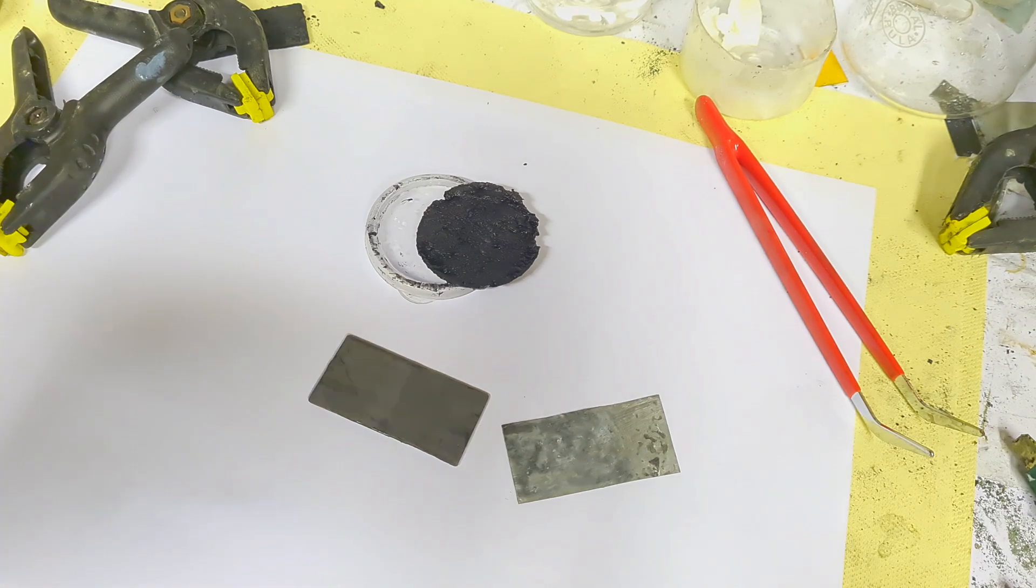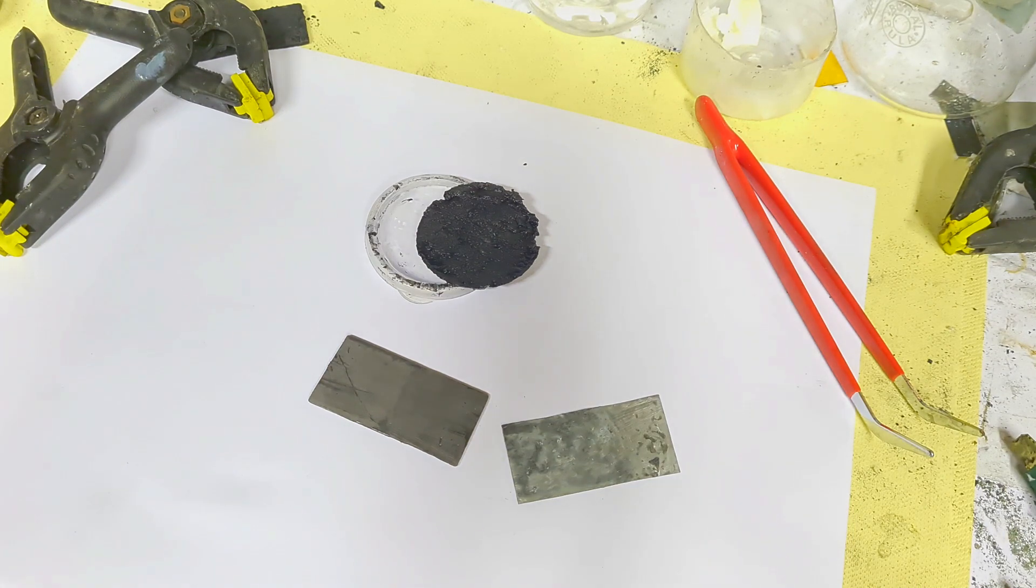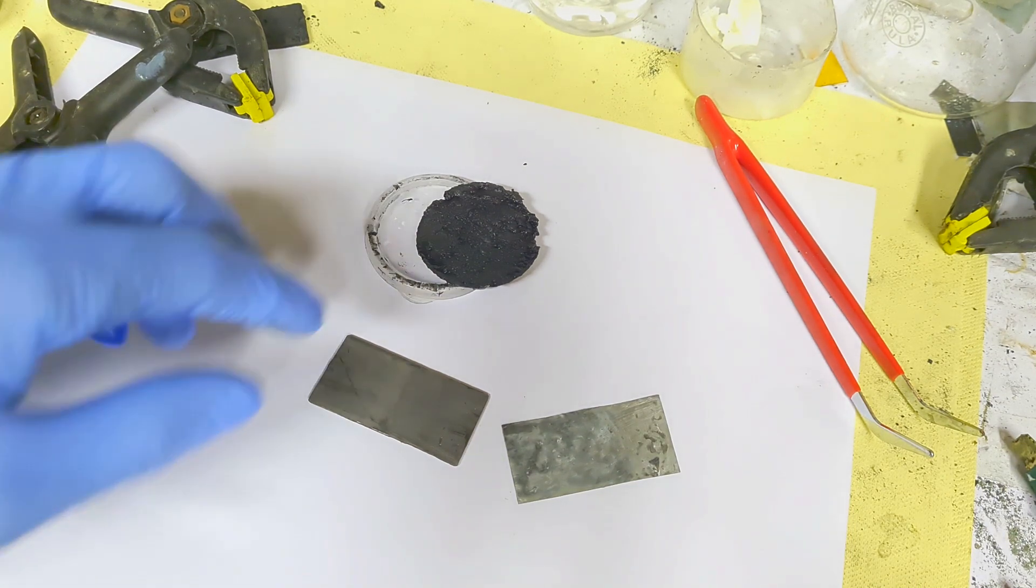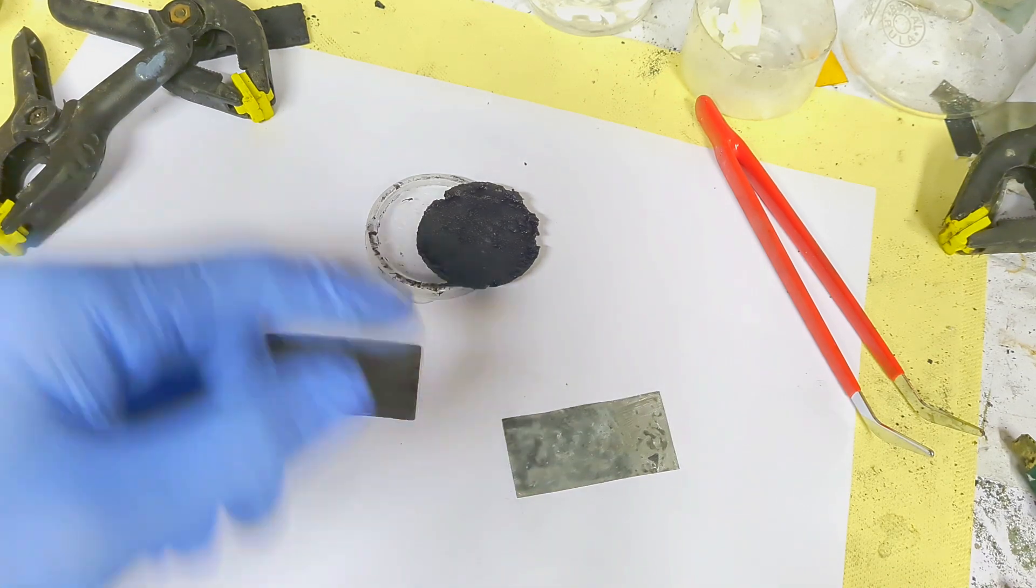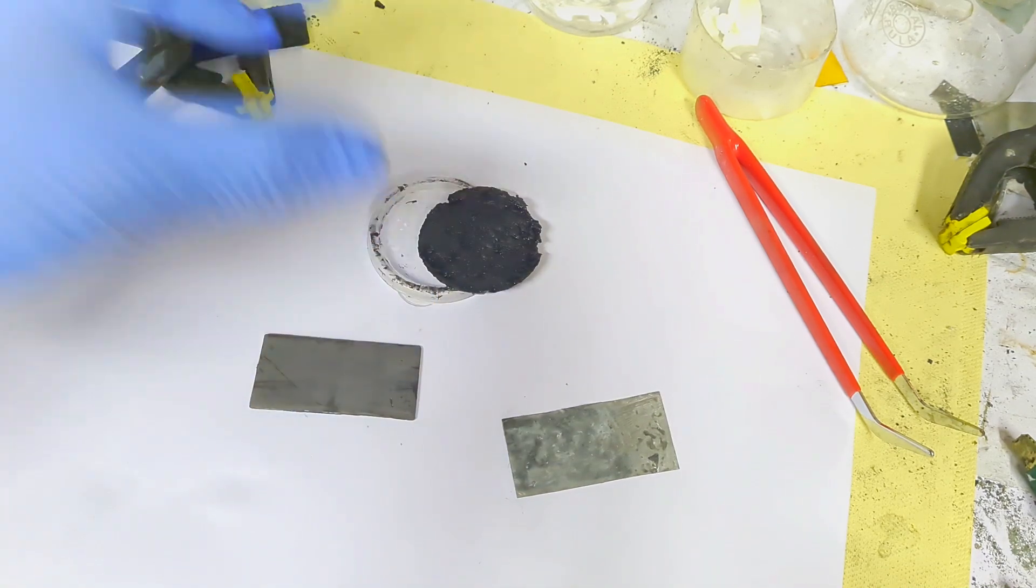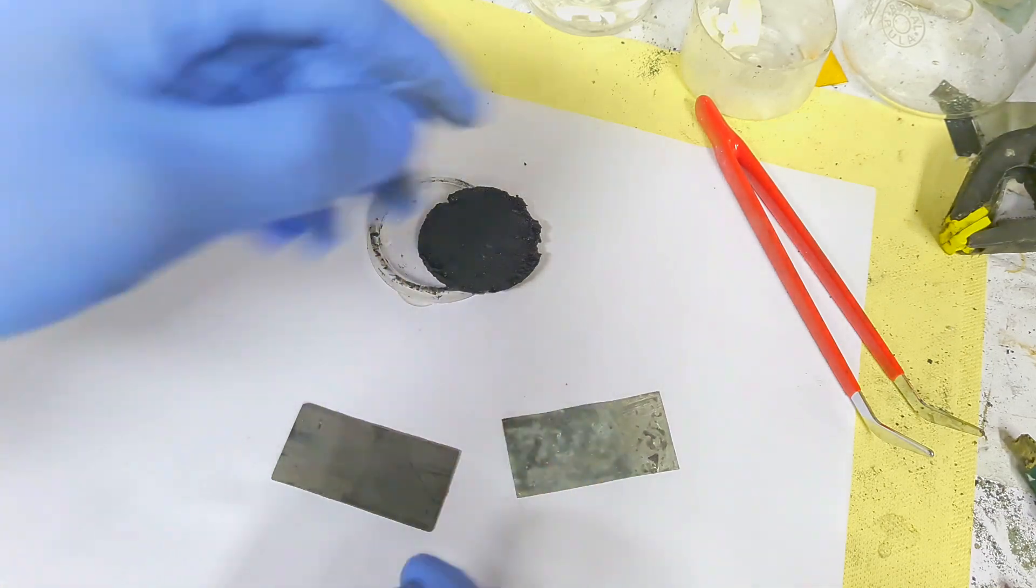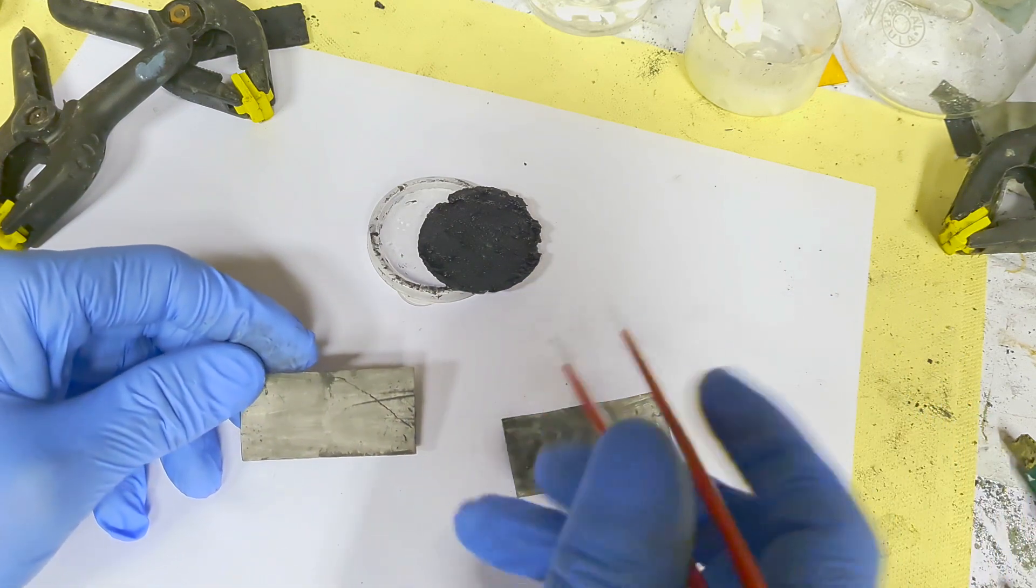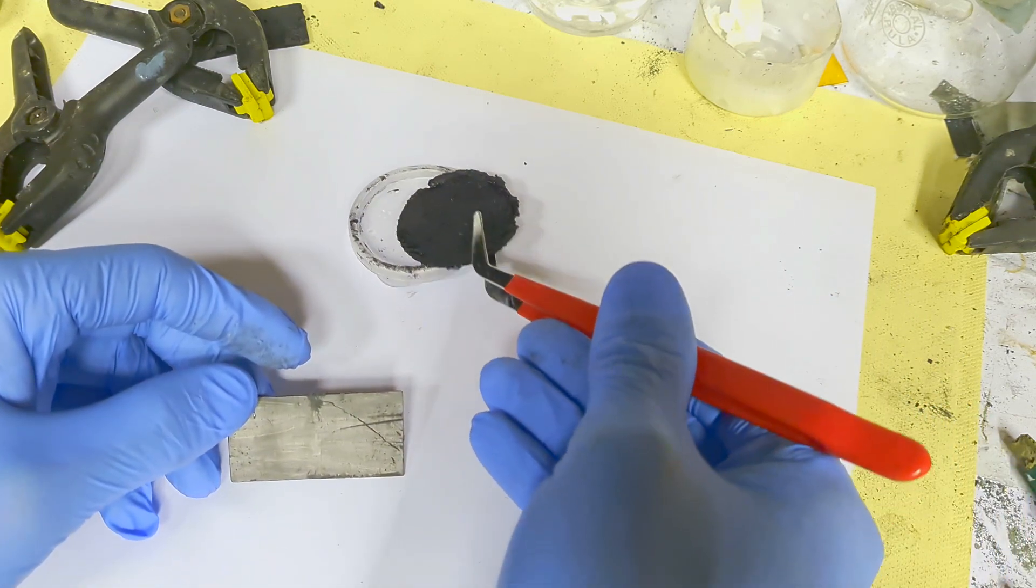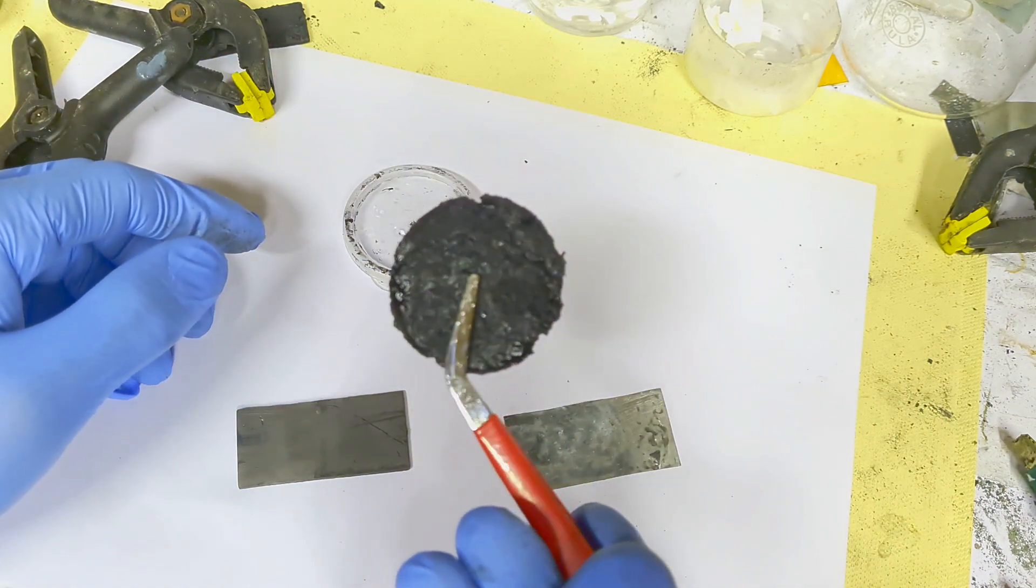To construct a zinc bromide gel battery, you only need a positive current collector, a negative current collector, and this power gel, and that's it. So, a graphite plate for the positive current collector, this power gel, and the negative current collector on the top.